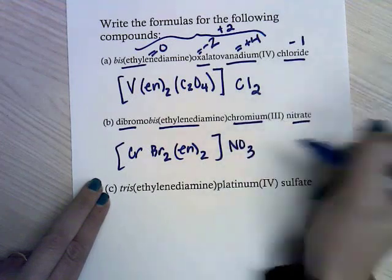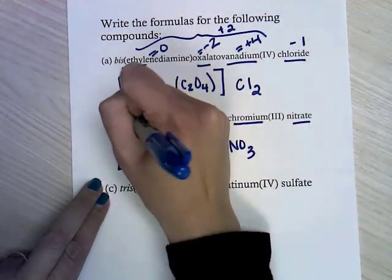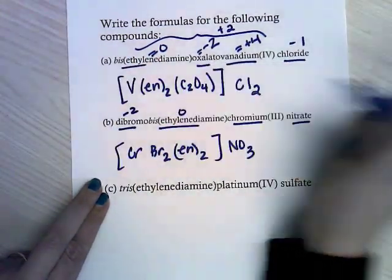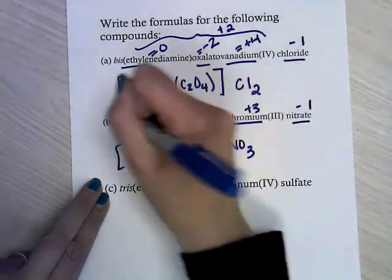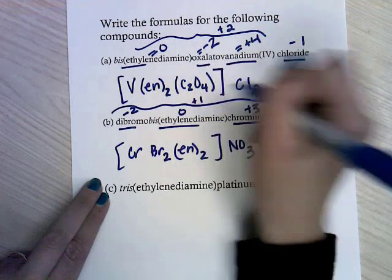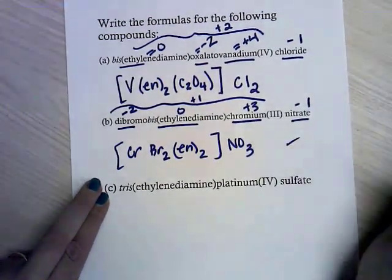NO3. So I've got ethylenediamine neutral, dibromo negative 2, chromium plus 3, and nitrate minus 1. So that all adds up to plus 1 and minus 1, so that's perfect the way it is.